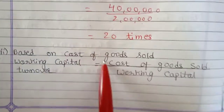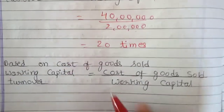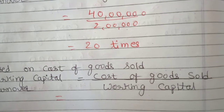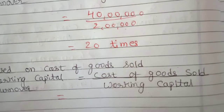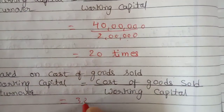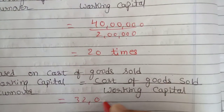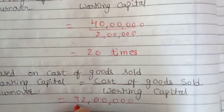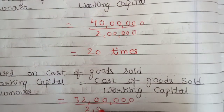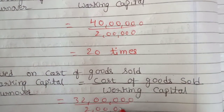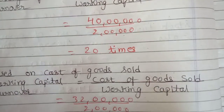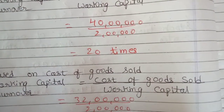Working capital turnover ratio based on cost of goods sold: cost of goods sold upon working capital. Cost of goods sold is Rs. 32,00,000 divided by working capital Rs. 2,00,000, giving working capital turnover ratio of 16 times.